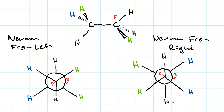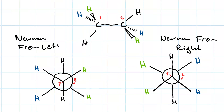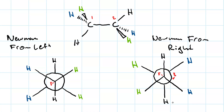What do you notice? Maybe we should number these instead — one and two — instead of front and back, because front and back changes. If we're looking from the left, one is the front and two is the back. If we're looking from the right, two is the front and one is the back. Also look at the triangles. Looking from the left, the one going straight down is in the plane — our triangle looks like this. Whereas when we're looking from the right, our triangle on our front carbon looks like this.